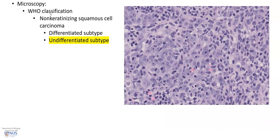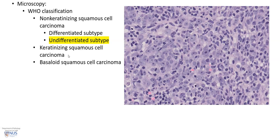Microscopically, these tumors are classified by the World Health Organization into several main types. One of the main types is non-keratinizing squamous cell carcinoma, which can be differentiated or undifferentiated. It is not obviously keratinizing or squamous in terms of its appearance, and this is the commonest type seen in Southeast Asia. It can also be keratinizing squamous cell carcinoma and basaloid squamous cell carcinoma.